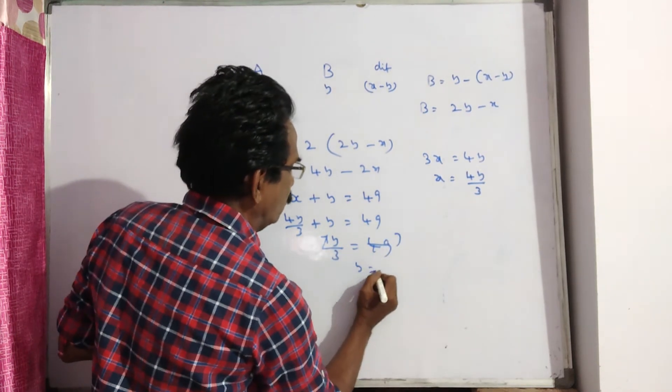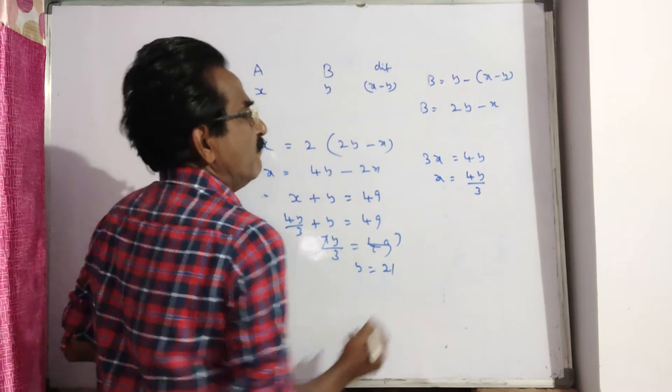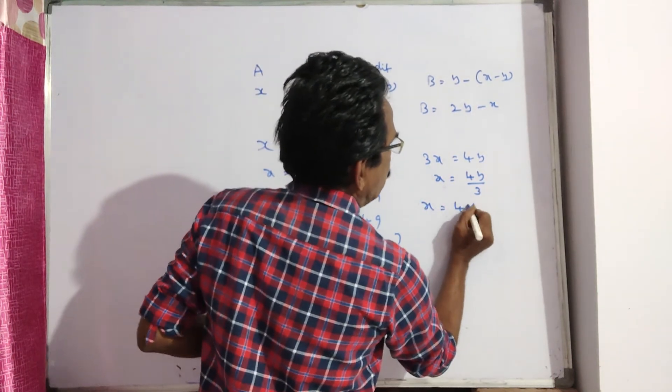7 divided by 7 gives Y is equal to 21. So X is equal to 28.